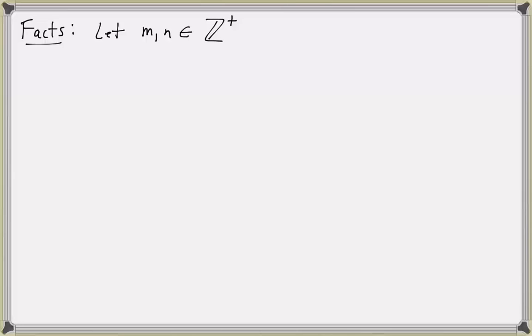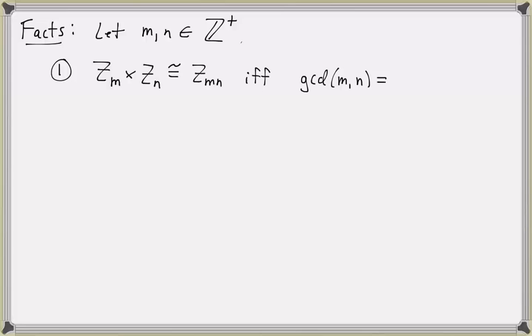Now let's look at a couple more facts about direct products that help us identify the isomorphism class of abelian groups. For positive integers m and n, the first fact is: Zm × Zn is isomorphic to Zmn if and only if m and n are relatively prime, i.e., gcd(m, n) = 1. For example, Z2 × Z3 is isomorphic to Z6.